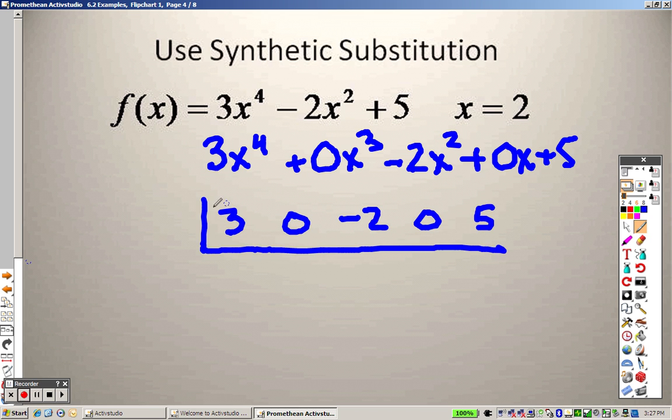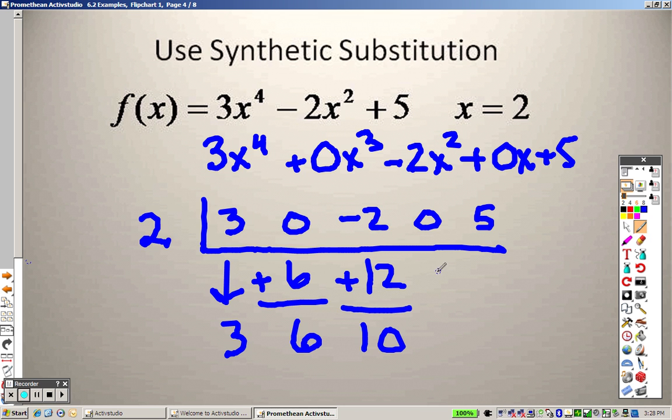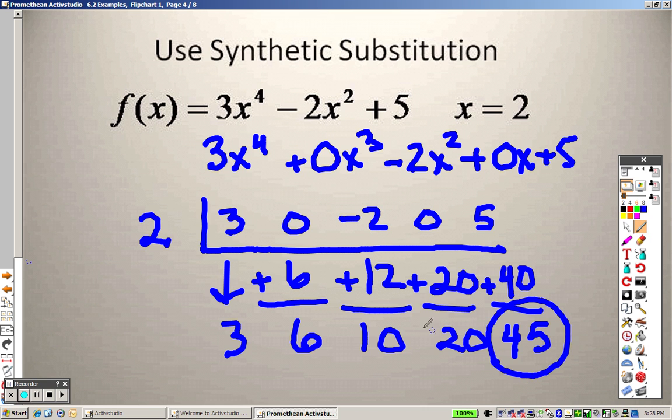And the number that we're plugging in is a 2, so I put the 2 there. So I bring down a 3. 3 times 2 is 6. I add them together to get 6. 6 times 2 is 12. I add them together to get 10. 10 times 2 is 20. I add them together to get 20. 20 times 2 is 40. I add those together to get 45. And 45 is your answer. So when you plug in 2, you end up getting 45 out.